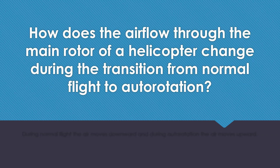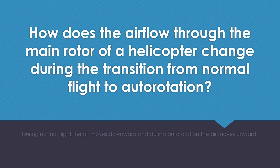How does the air flow through the main rotor of a helicopter change during the transition from normal flight to auto-rotation? During normal flight the air moves downward, and during auto-rotation the air moves upward through the main rotor.